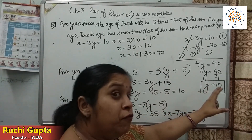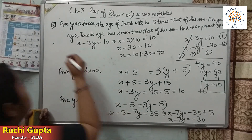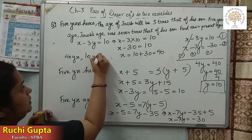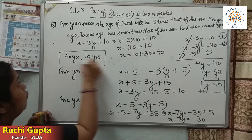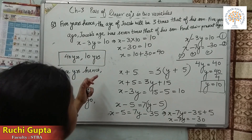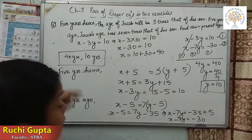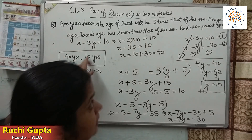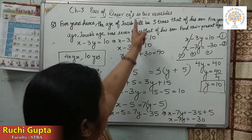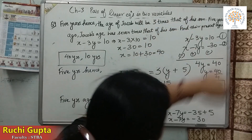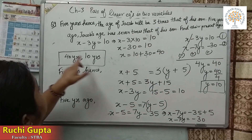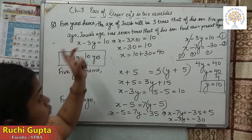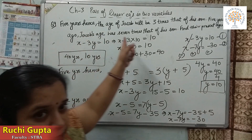Let's verify our answer. Jacob's present age is 40 and son's is 10. After 5 years: Jacob is 45 and son is 15; 15 times 3 is 45 — correct. 5 years ago: Jacob was 35 and son was 5; 5 times 7 is 35 — correct. We have verified both conditions.